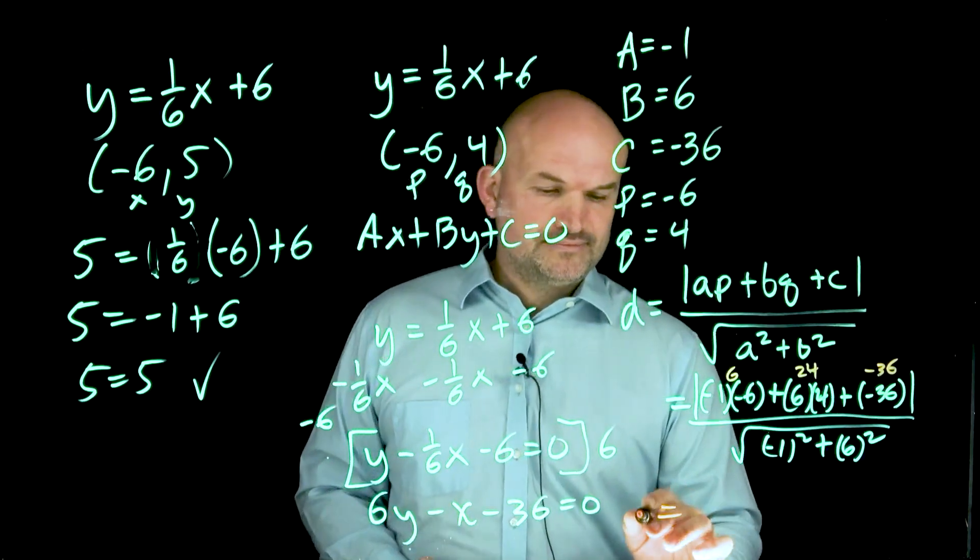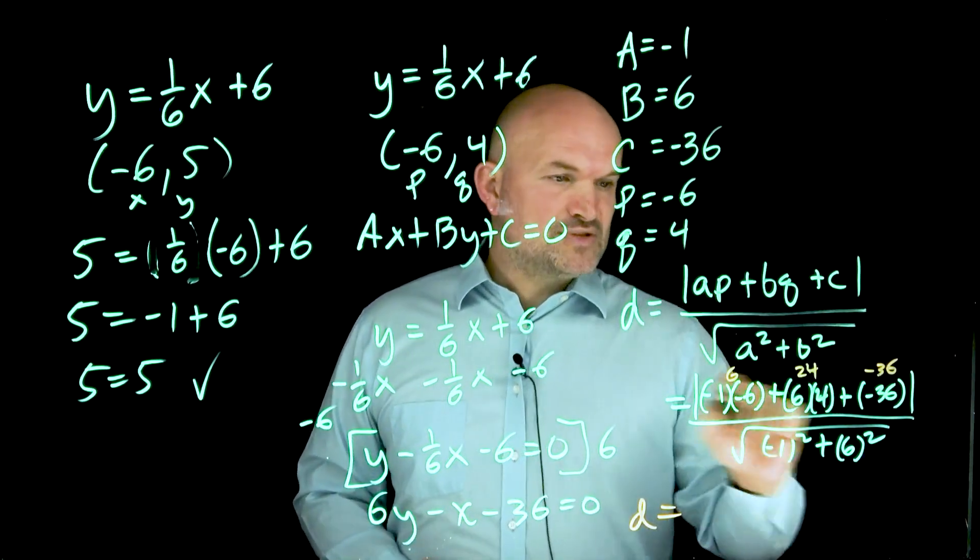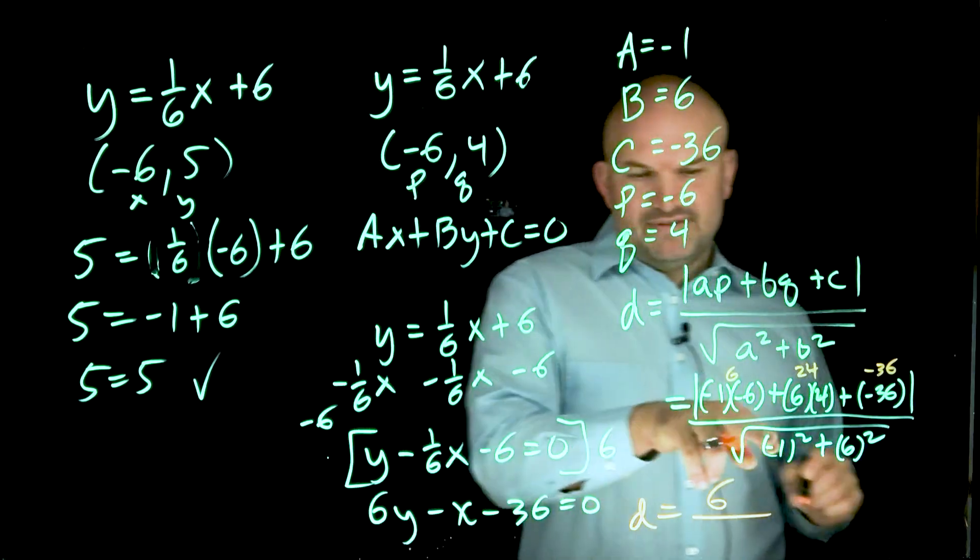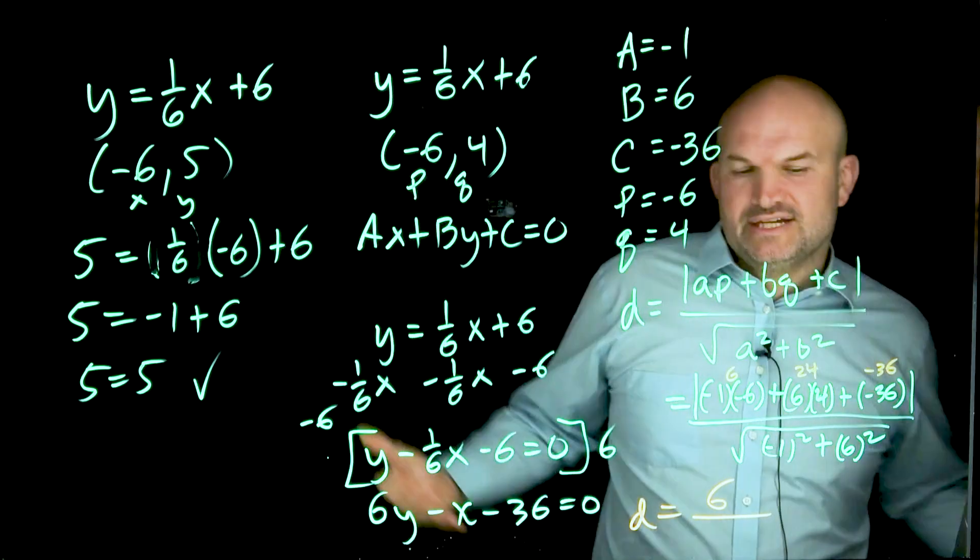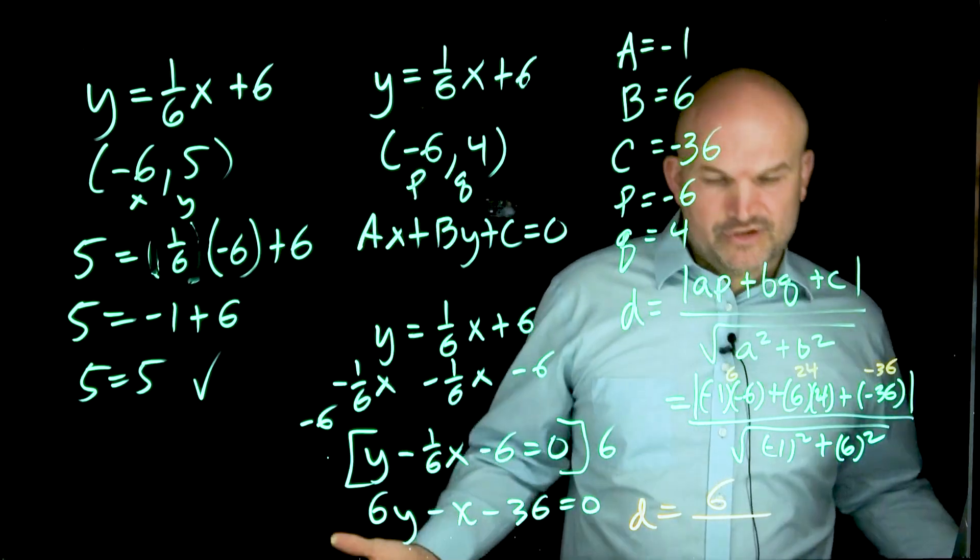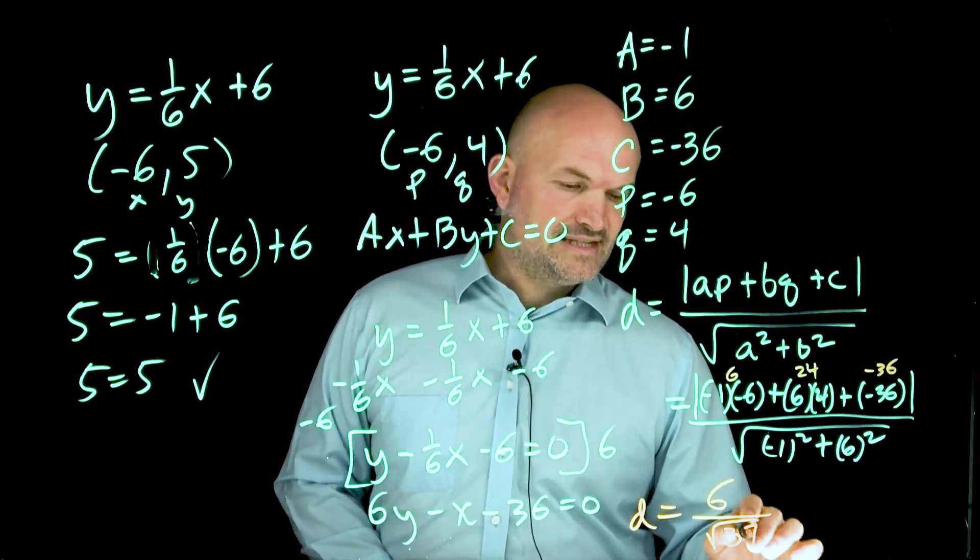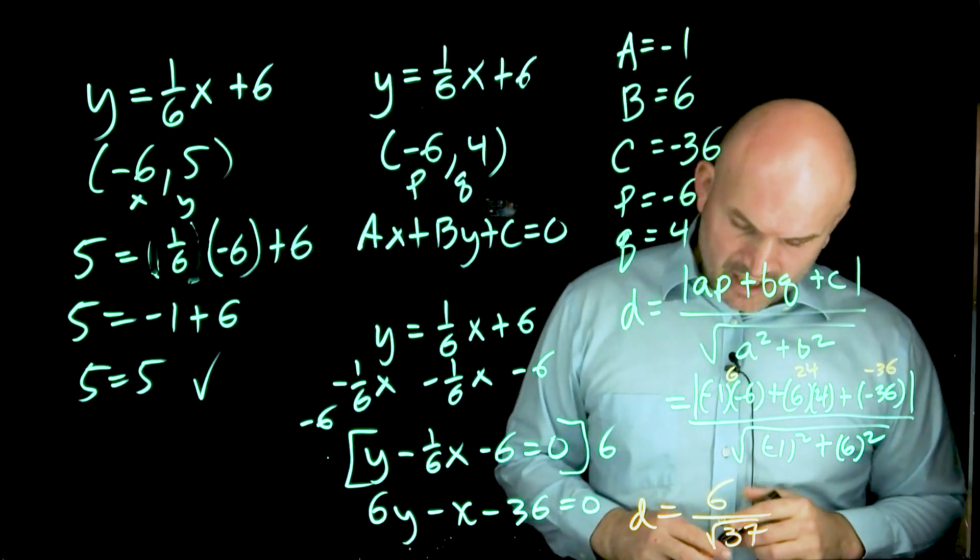So distance equals the absolute value of negative six, which is positive six. And then over here, I have negative one squared, which is one, six squared, which is 36, 36 plus one is 37. But that's under the radical. So therefore, my final answer is six over the square root of 37.